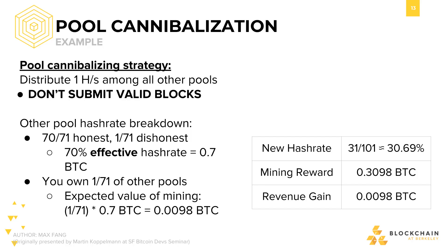What that looks like in this particular scenario is as follows. The rest of the pools are 70 parts honest and one part dishonest. By honest, we mean mining and submitting valid blocks, and dishonest means withholding valid blocks — which is what we're doing. What this means is that the effective hash rate of the other pools has not changed; it's still 70%. However, the mining pools are still paying out to us. This means that our expected value of mining with this 1% of hash power ends up being 0.0098 Bitcoins.